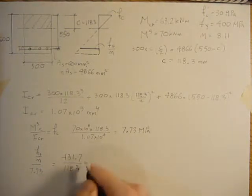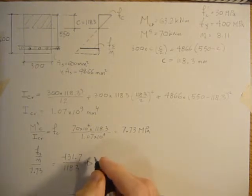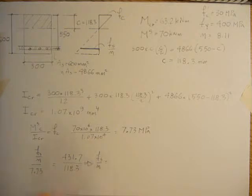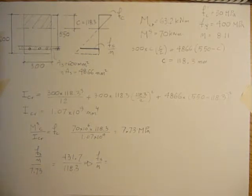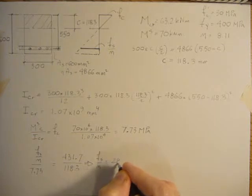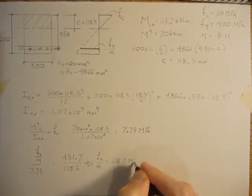So we can solve for FS over N by just rearranging: 431.7 times 7.73 divided by 118.3. That's going to give us 28.2 MPa.